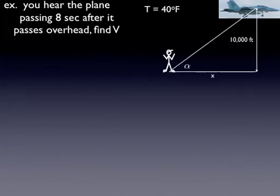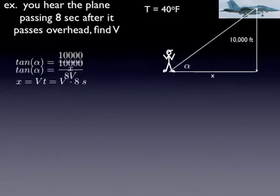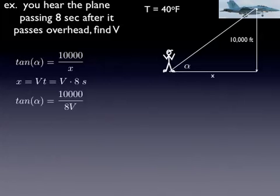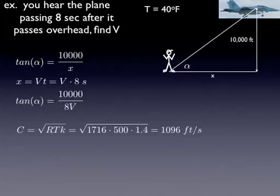So using trigonometry, the angle between you and the jet when you first hear it is simply the tangent of that angle is 10,000 feet divided by the distance that aircraft traveled. Now it's traveled for 8 seconds, so we can relate that to velocity. So we come up with this equation. We've got two unknowns. We've got the angle and the velocity. We can also use that Mach-Cone equation. First let's figure out what the speed of sound is. So I looked up the ideal gas constant and the heat ratio for air. And 40 degrees Fahrenheit is 500 degrees Rankine. And I get a speed of sound of over 1,000 feet per second.